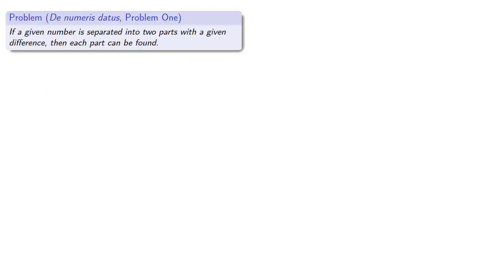For example, the very first problem in De Numeris Datis is if a given number is separated into two parts with a given difference, then each part can be found. Notice that Jordanus is claiming a theoretical result. It is possible to solve this problem.